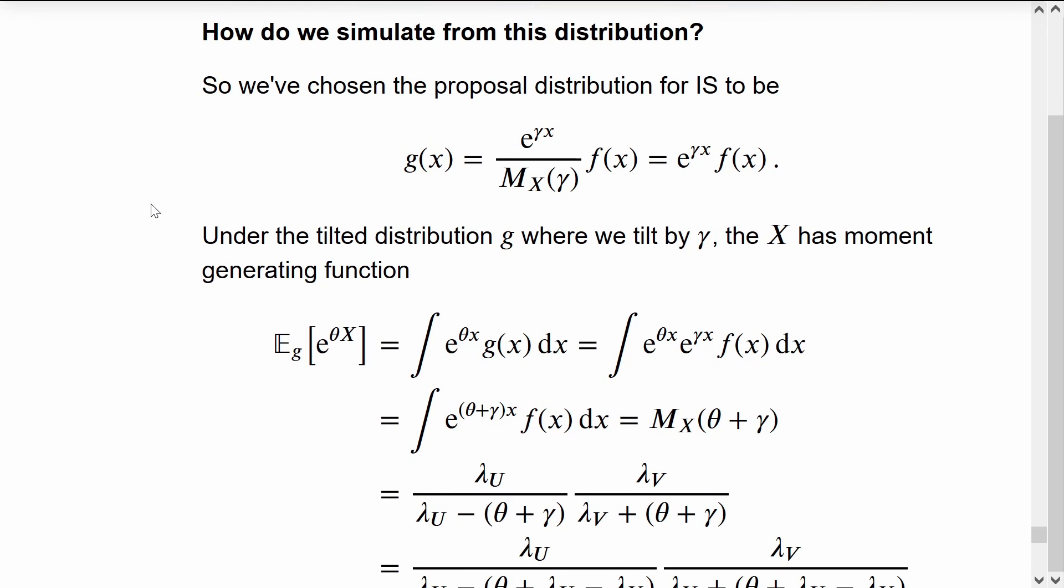Now that we've chosen a specific proposal distribution, we need to be able to simulate from it. The proposal distribution G has a quite simple density, that is e to the gamma X times the original density F.